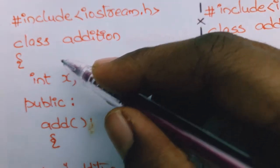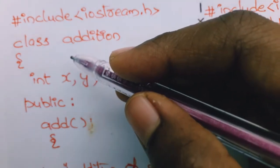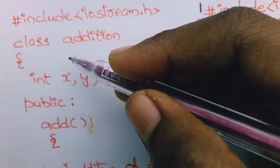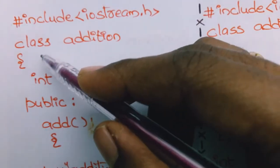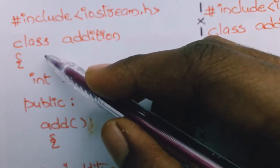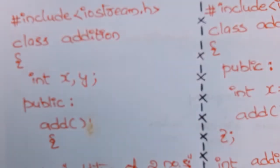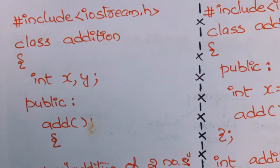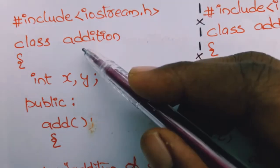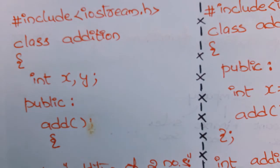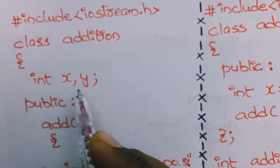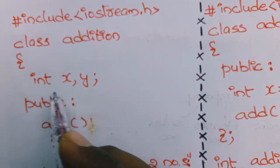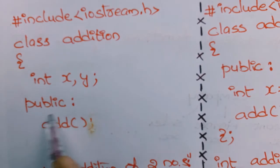Next you need to declare the class. Since we are doing addition of two numbers using a class, you need to mention the class keyword. A class can be declared using the class name — here I have used the class name 'addition'.